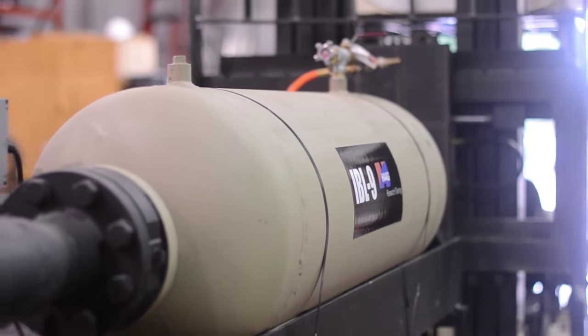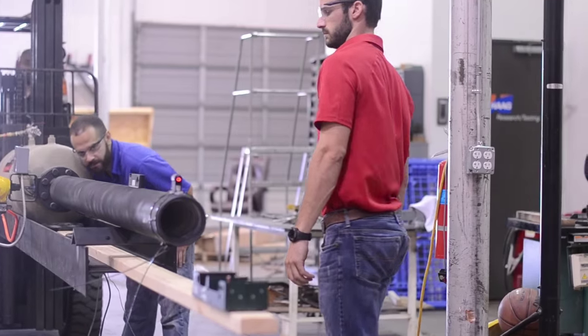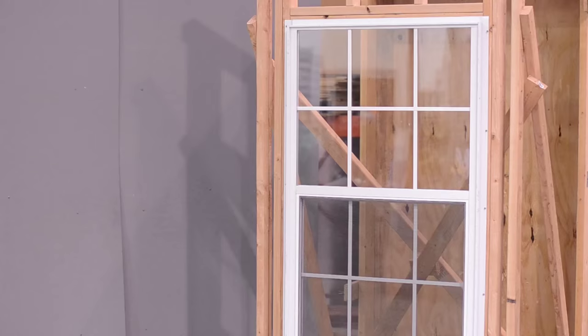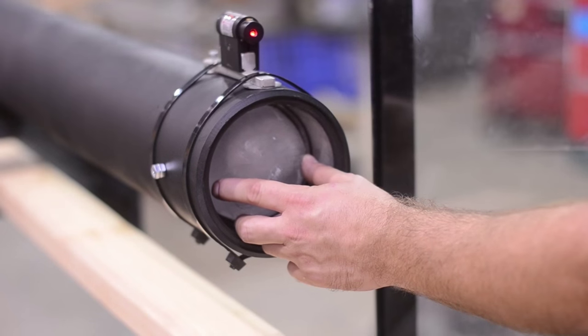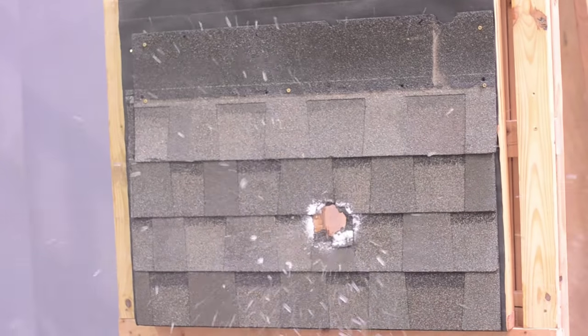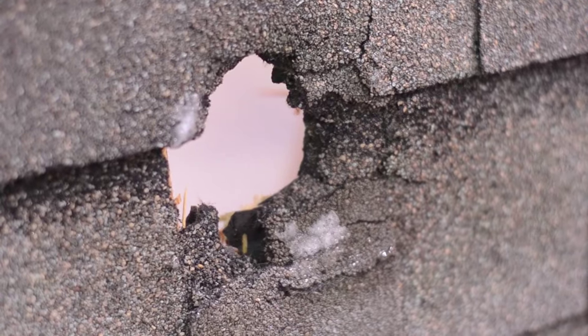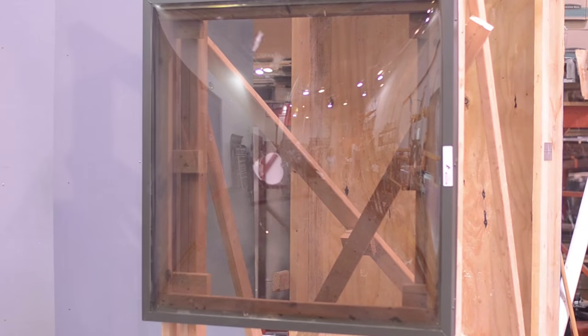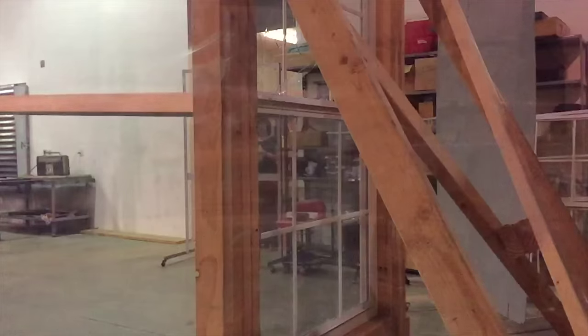Our IBL-9 allows us to make impacts with large missiles, including 2x4s and ice balls up to 4 inches in diameter. We can identify damage patterns and failure modes for all types of building materials, including skylights, siding, and windows.